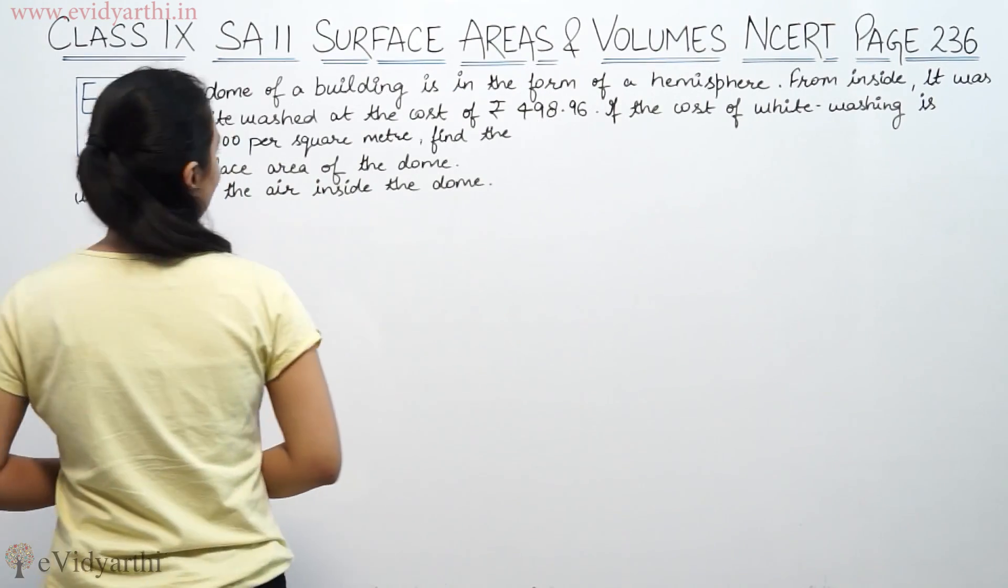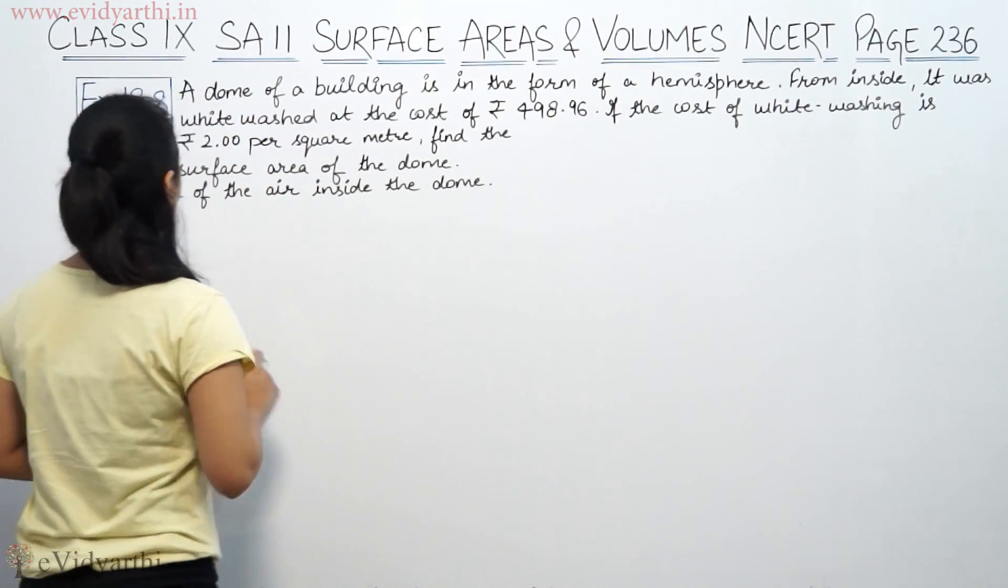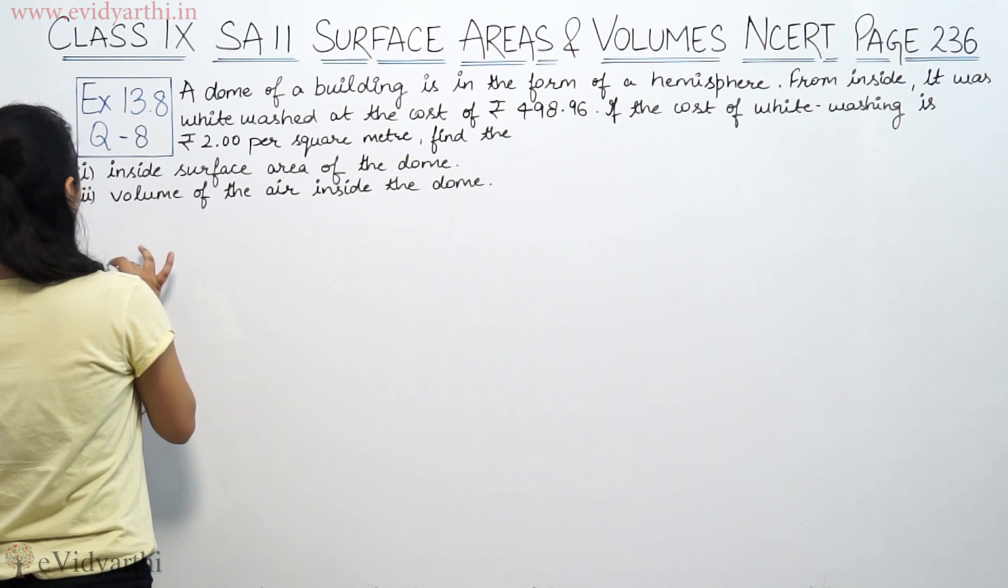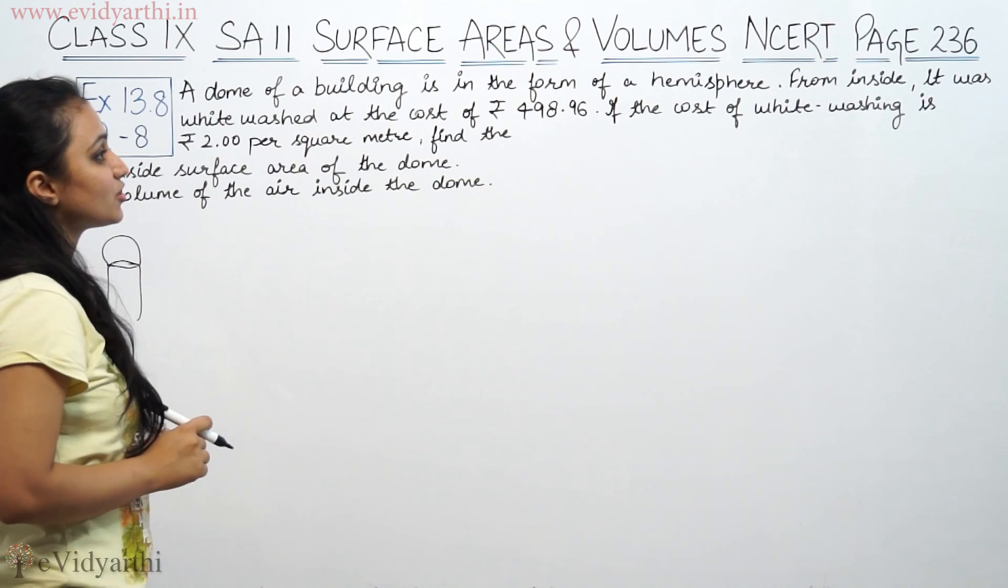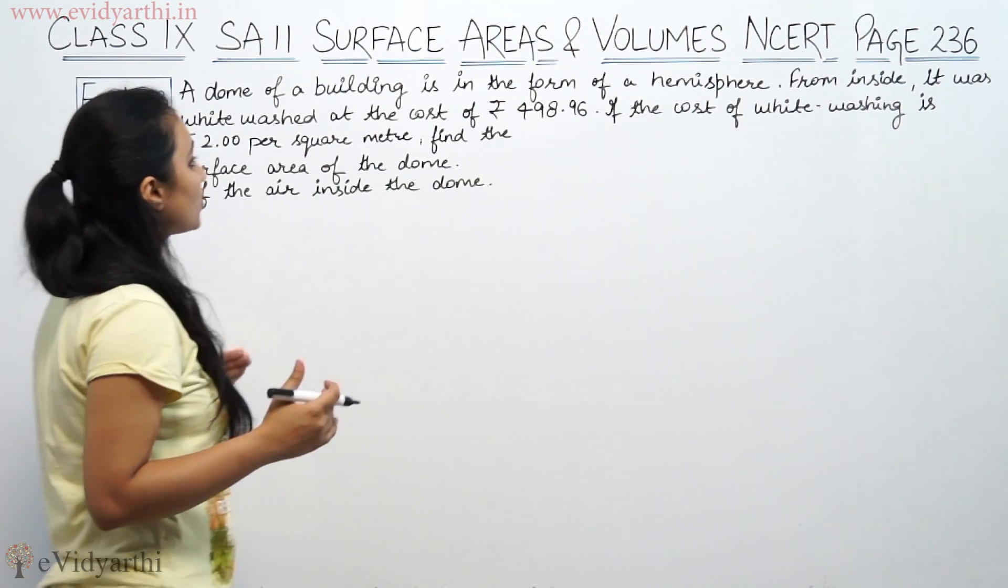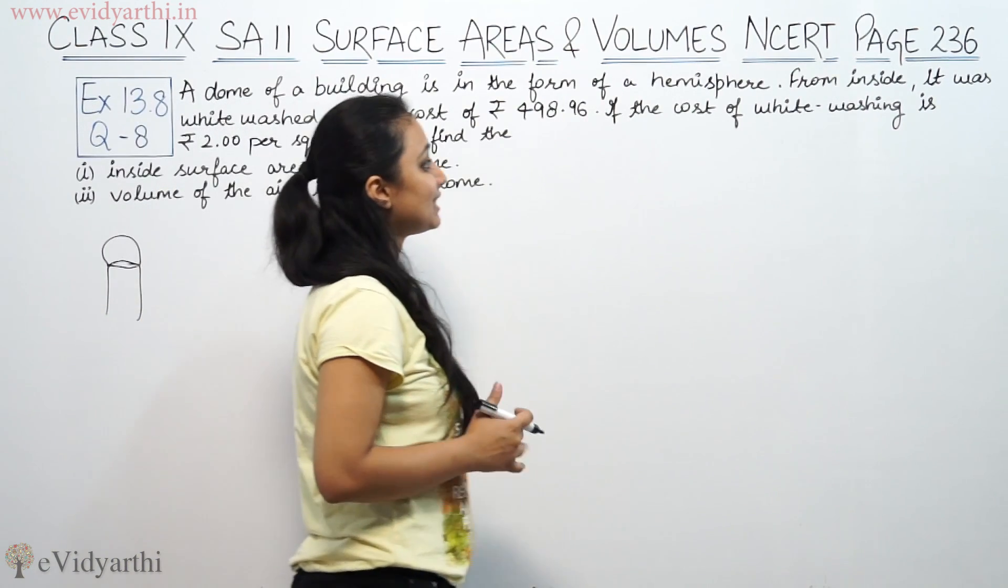It says a dome of a building is in the form of a hemisphere. So suppose this is the building, which has a dome. Can we see a shape here? So from inside, it was whitewashed at the cost of rupees 498.96.